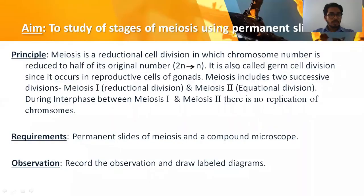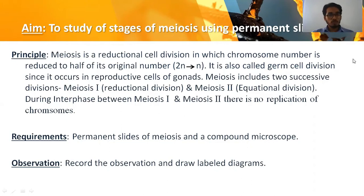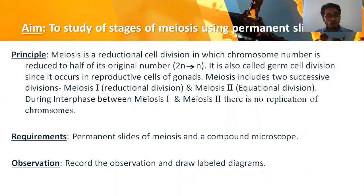The aim of the experiment is to study the stages of meiosis using permanent slides. The principle: meiosis is a reductional cell division in which the chromosome number is reduced to half of its original number. The cell which is diploid in nature, having two pairs of chromosomes, gets reduced to half of its original number.